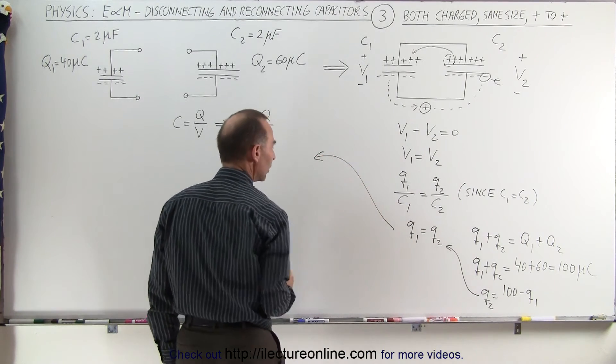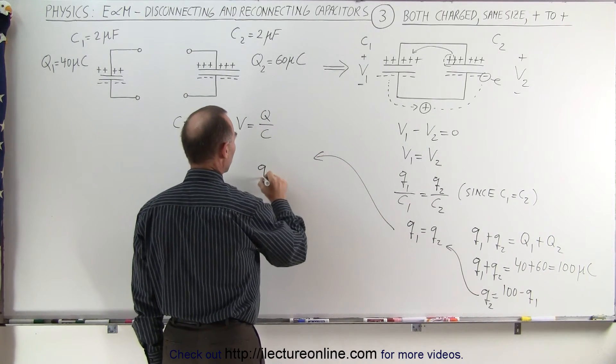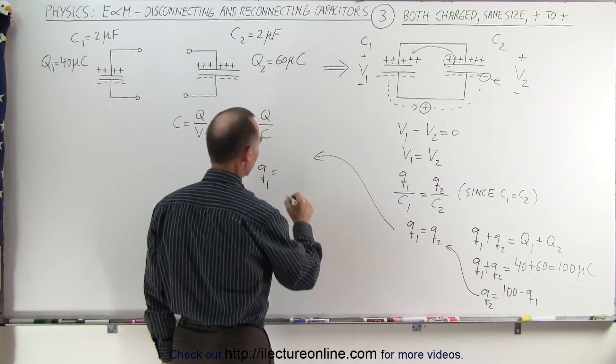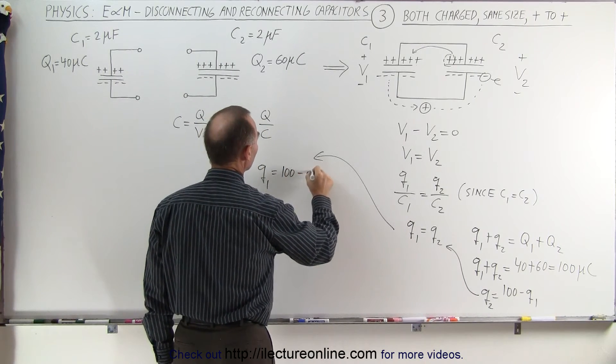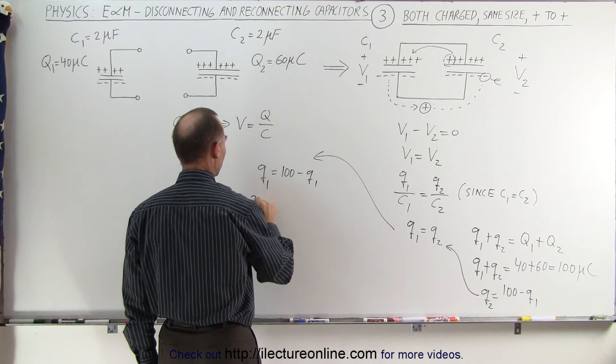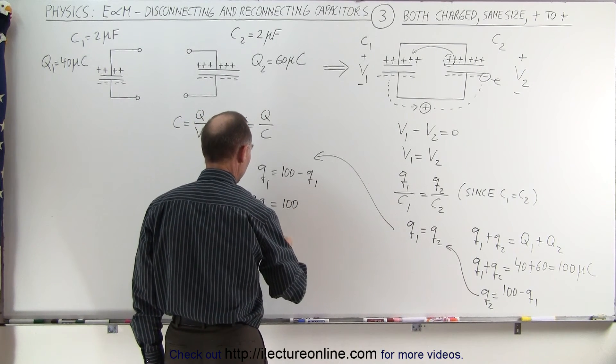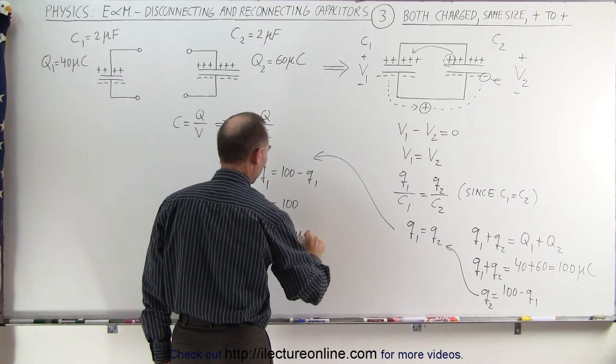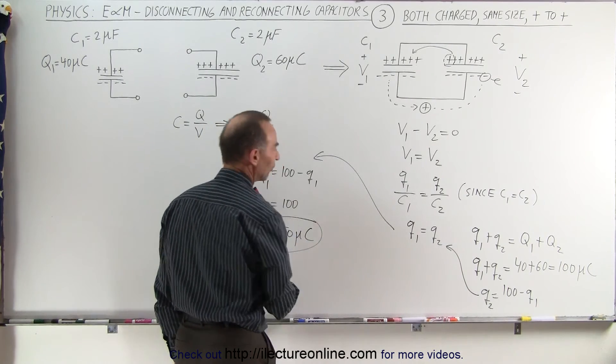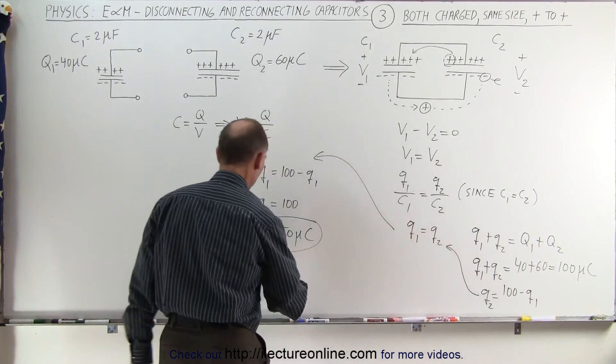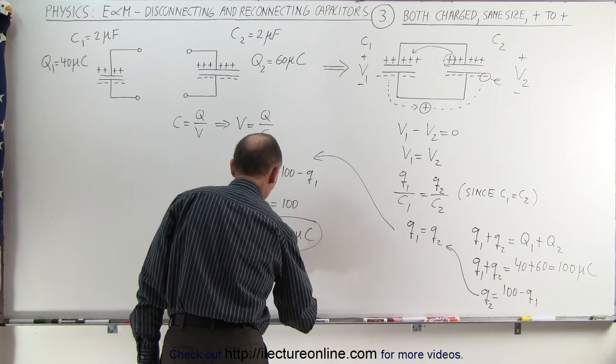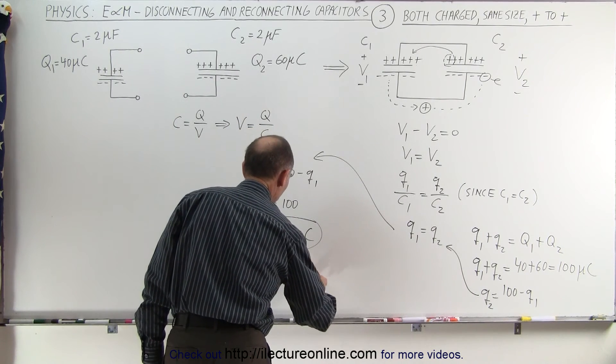And continuing over here, we can write that Q1 equals 100, which means Q1 equals 50 microcoulombs. And then, of course, since Q1 equals Q2, we can say Q2 equals 50 microcoulombs as well.